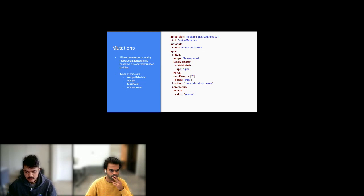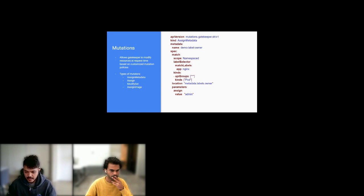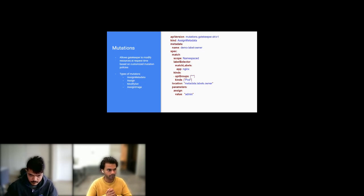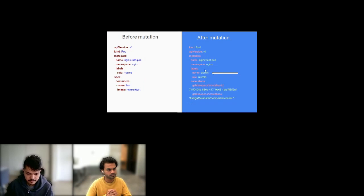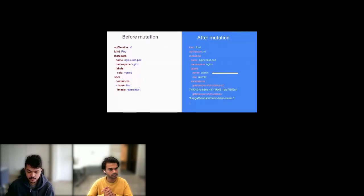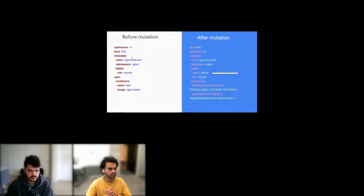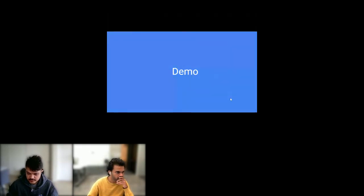All mutators can be divided into three distinct sections: the extent of changes, which defines what needs to be modified — essentially the match section of the spec; the intent of changes, defining where the changes should happen — that's the location part of the spec; and conditions under which the mutation should be applied — the parameters part of the spec. In the example on the right, the AssignMetadata mutator will be applied to a pod that has an nginx label, and it will add the label 'owner' with the value 'admin.' Before mutation there is no owner label, and once the pod is applied with mutation in place, Gatekeeper will add the owner label.